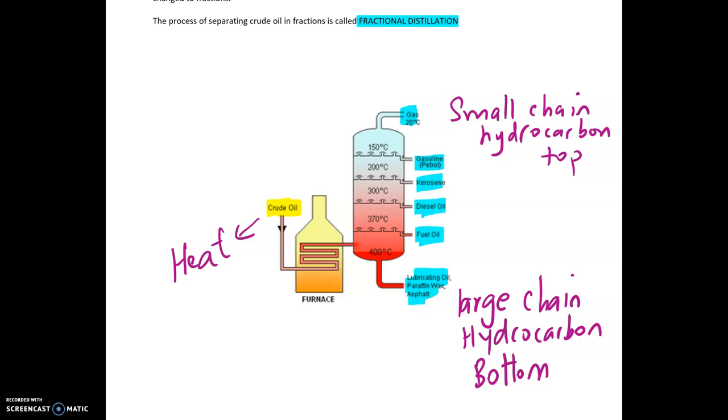In the GCSE exam you will be asked for the uses of these. If you look at right at the top you've got camping gas. You then got petrol that's used for your cars, kerosene is an airplane fuel, diesel for lorries and buses, fuel oil for ships, and then you got lubricant oil and bitumen which is your road tarmac. If you look at the bottom of the column you will have large hydrocarbon chain which means they will have stronger bonds, high temperature, and they will be less viscous so you can't pour them. They will be less flammable.